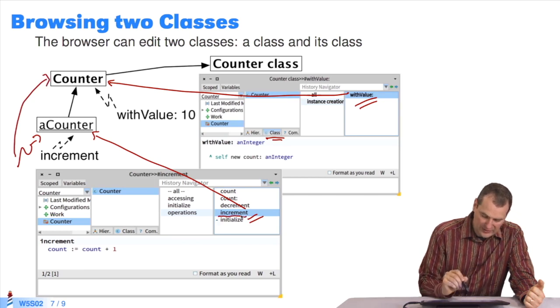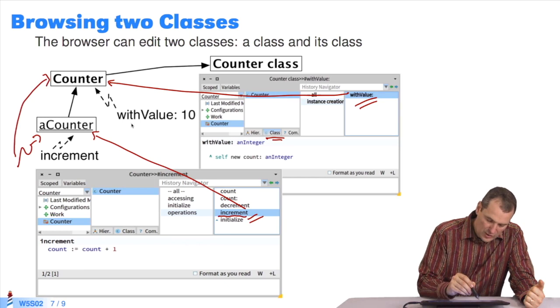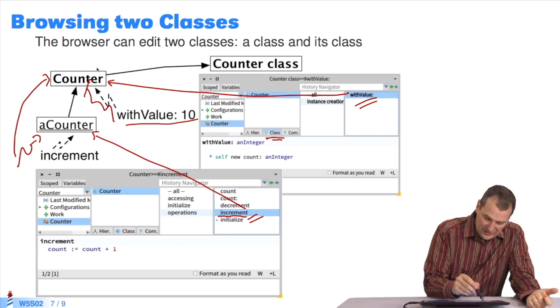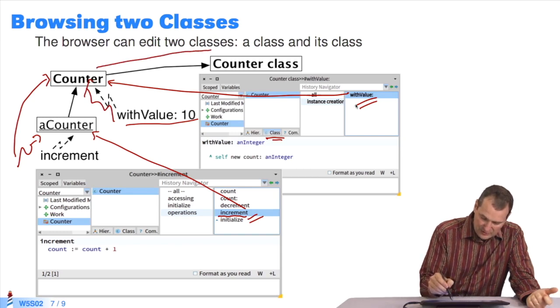when I send the message increment to the counter instance, I'll look in the counter class. Look, that's the method executed. When I send the message withValue to the counter class, where will I look? In its class. I follow this link, and it's this method here.